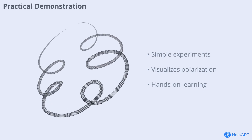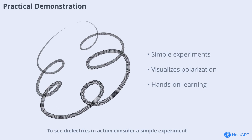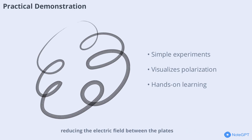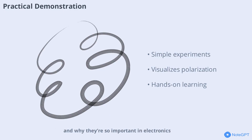To see dielectrics in action, consider a simple experiment: placing a plastic rod between two charged plates. The rod doesn't conduct electricity, but it does become polarized, reducing the electric field between the plates. This demonstrates how dielectrics work in capacitors and why they're so important in electronics.